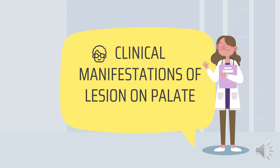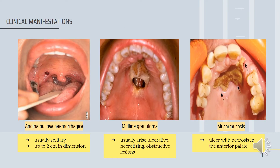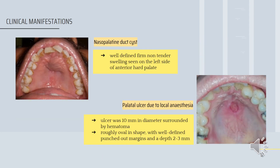Now, for the clinical manifestation of lesions on the palate. Angina bullosa hemorrhagica is usually solitary, up to 2 cm in dimension. Midline granuloma is usually a raised ulcerative, necrotizing and destructive lesion. Mucormycosis presents as ulcer with necrosis in the anterior palate. Nasopalatine duct cyst is well defined, non-tender swelling seen on the anterior hard palate. Palatal ulcer due to local anesthesia is approximately 10 mm in diameter, surrounded by hematoma, oval in shape with well-defined punched-out margins and a depth of 2 to 3 mm.